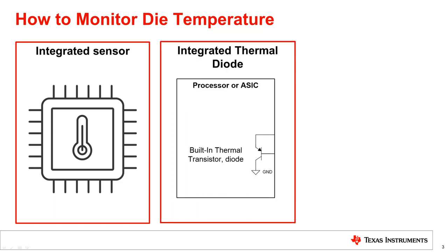The second method is by using an integrated thermal diode. Many processors and ASIC chips have an integrated thermal diode that is pinned out for die temperature sensing. These thermal diodes have very predictable transfer functions that are directly dependent on temperature. Remote temperature sensors can be used to measure the temperature of the die by utilizing this predictability. Using this method can result in very good accuracy, but can be challenging due to noise and error caused by process variations.